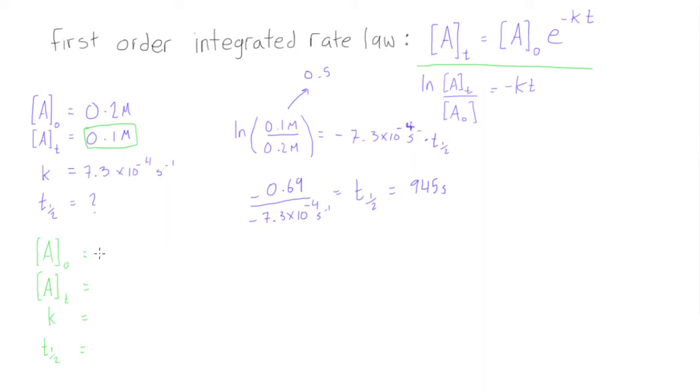So we can just fill this in here, this will become our new A0, which is going to be equal to 0.1 molar, and then A at t, we're going to see it'll be 0.05 because we want half of that, and everything else will be the same, the k value, you just don't want to write that in again.